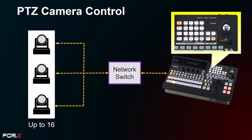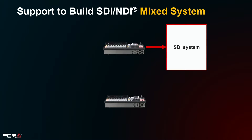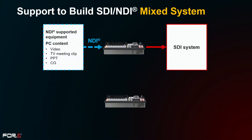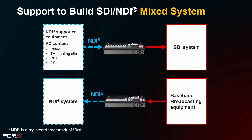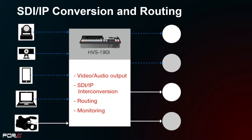A mixed SDI/NDI system can be constructed by adding NDI output compatible equipment and PC content to an SDI system, or by adding baseband broadcasting equipment to an NDI system. SDI devices plus outputs such as PTZ cameras and PC contents can be distributed to multiple locations from a single switcher for video and audio output, SDI/IP interconversion, and routing.